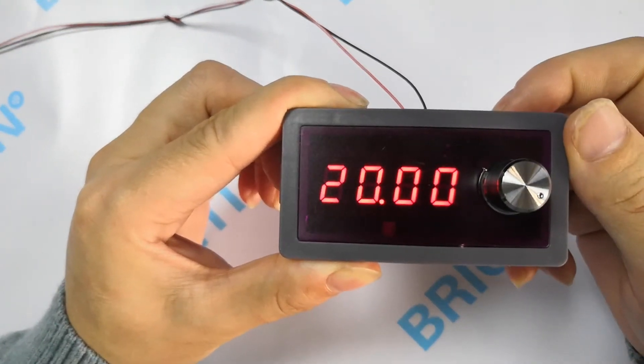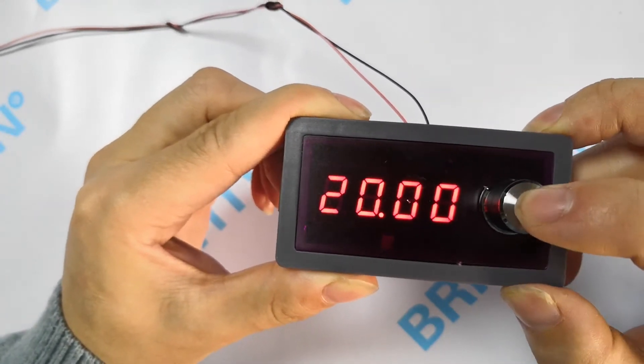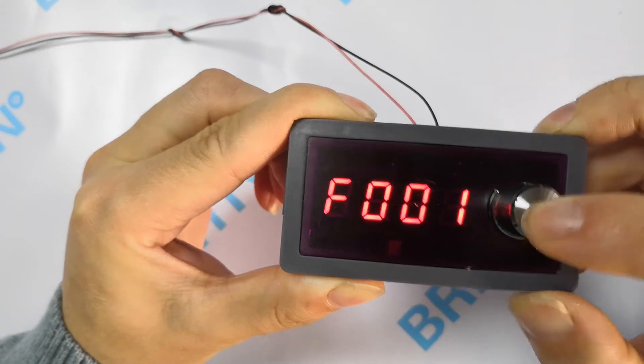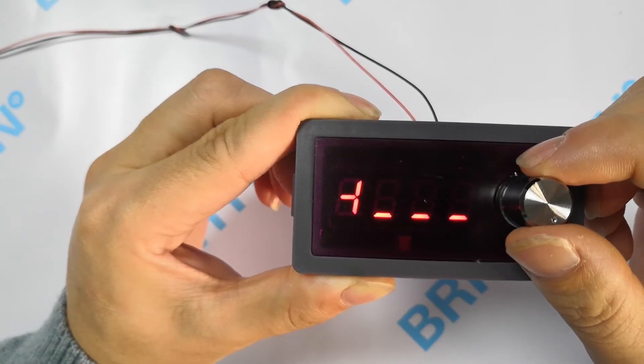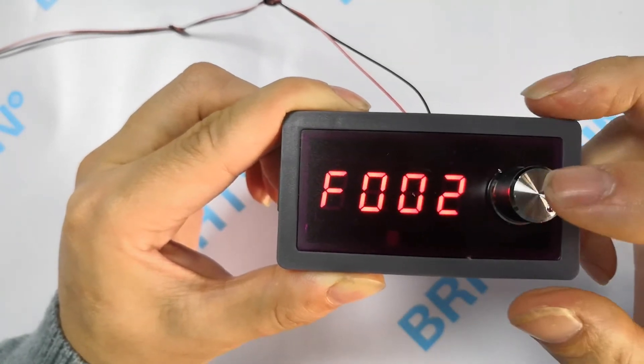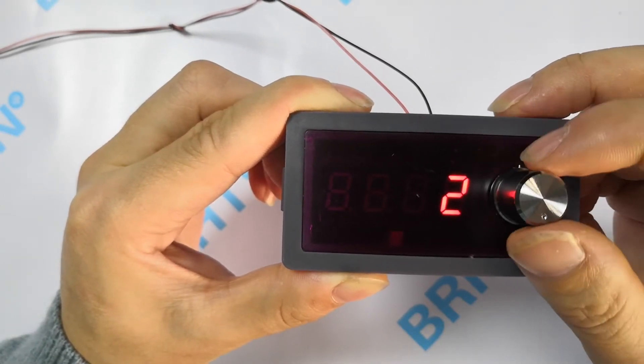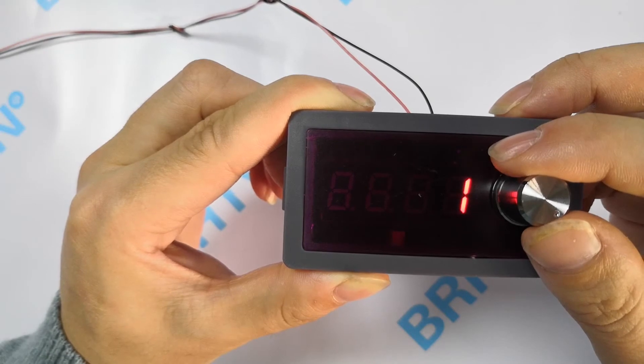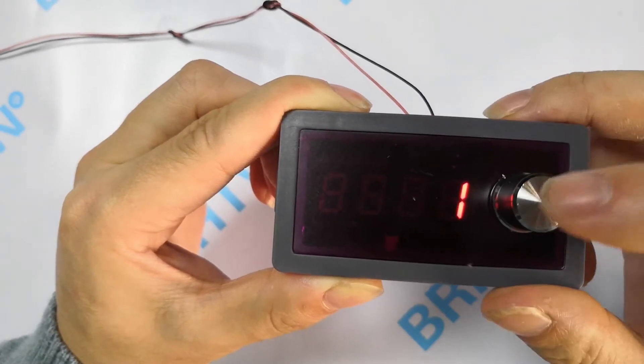Now let's change its output range into 4-20 mAh. Firstly, press down to display F001, rotate once, enter password: clockwise rotation once, counterclockwise rotation twice, clockwise rotation once, press down, and press down again to change parameters. 0 indicates output 0-20 mAh, 1 indicates output 4-20 mAh, 2 indicates output 0-22 mAh. Let's change it into 1. Press down.